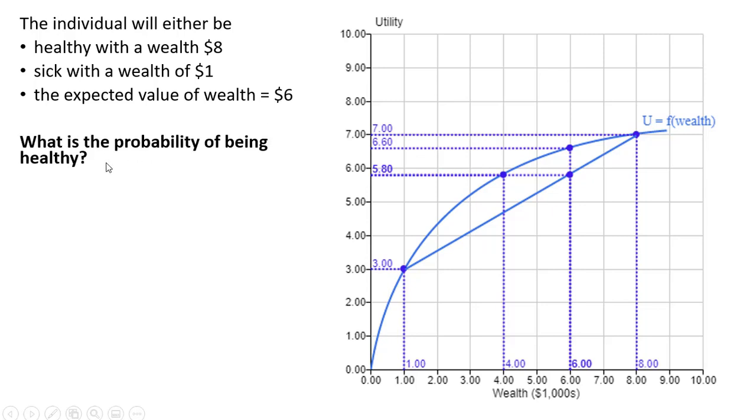Let's first solve for the probability of being healthy. We set up our expected value formula, which is the probability of being healthy times the wealth when the person is healthy, which is $8. And we can see that $8 on the graph over here. And then we're going to add to it 1 minus the probability of being healthy, which is just the probability of being sick, multiplied by the wealth when the person is sick, and that's $1. And we can see that on the graph over here at $1.